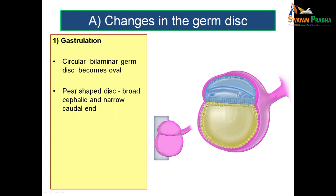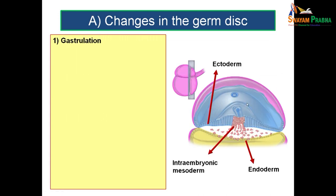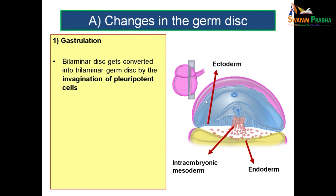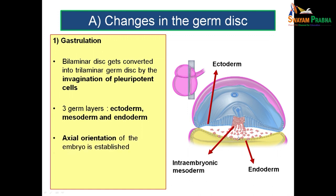By the end of second week, we have a bilaminar germ disc. By the process of gastrulation, this bilaminar germ disc becomes an oval disc, now called the trilaminar germ disc, by the formation of intraembryonic mesoderm. Before the formation of the trilaminar germ disc, the circular disc becomes oval, roughly in the form of a pear with a broad cephalic end and a narrow caudal end. The bilaminar germ disc is converted into the trilaminar germ disc by invagination of pluripotent cells from the epiblast — cells capable of giving rise to any sort of cells. You get three germ layers: the epiblast, the hypoblast, and in between, the mesoderm. Once this is established, an axial orientation of the embryo is established.